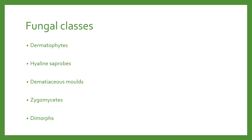Let's cover the five fungal classes. We've got the dermatophytes, which are the toenail funguses. The hyaline saprobes, which include Aspergillus and Penicillium. The dematiaceous molds, which are the darkly pigmented molds. The zygomycetes, which are your quick-growing resistant molds. And the dimorphs, which are a yeast in vivo and a mold in vitro.